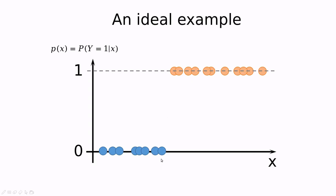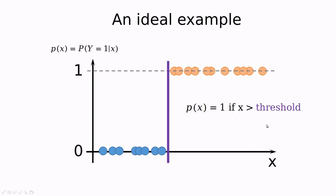Imagine this ideal example: we have the blue dots and the orange dots, and in this case classification is pretty simple. We could draw a line here and say everything that is above that threshold point is going to be one, otherwise it's going to be zero.